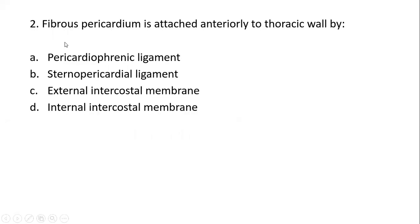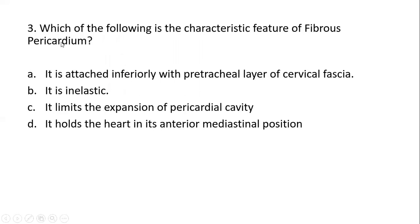Question two: fibrous pericardium is attached anteriorly to the thoracic wall by... Again, a very straightforward question. You are supposed to pick the one best answer describing the true anterior attachment of the fibrous pericardium to the thoracic wall. Out of the four options, three are incorrect and one is correct.